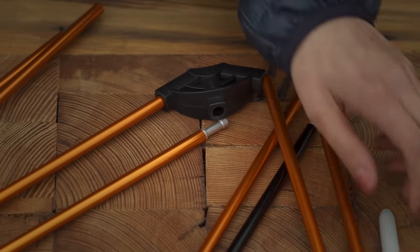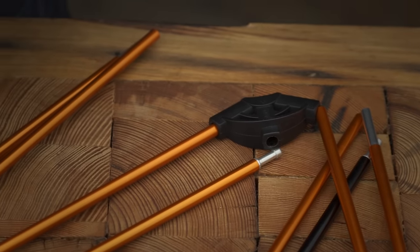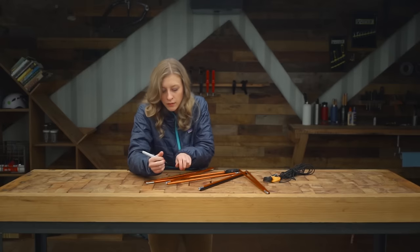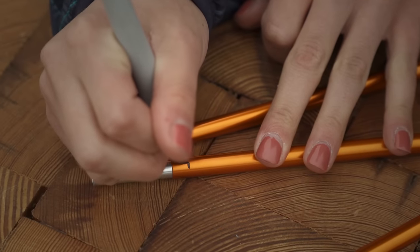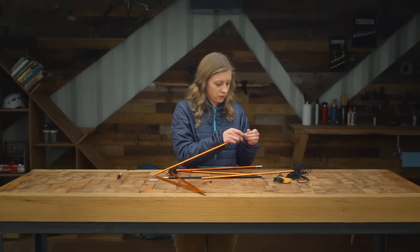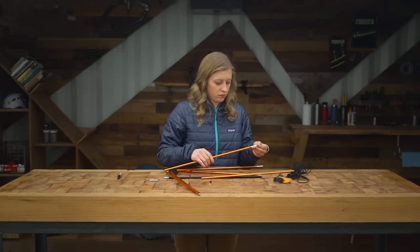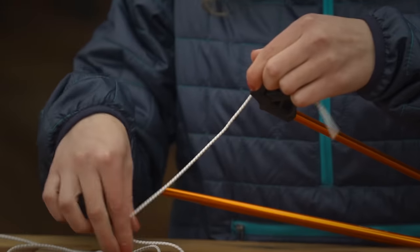Once you have a good idea of how the pole system is put together, take a permanent marker and number the pole sections so you can put them back together in their original order. Now you can untie or cut the old shock cord, pull it out, and lay it down so you can cut your new cord to the same length.